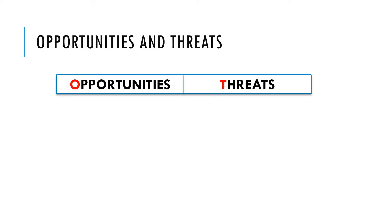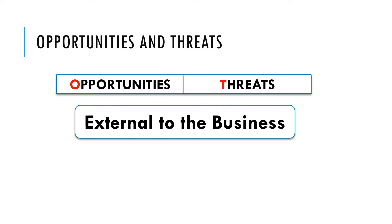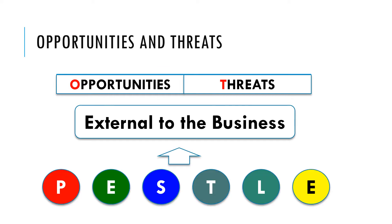Opportunities and threats are external to the business — they are to do with the external environment. To try and identify them, we might use the PESTEL approach and look at political, economic, social, technological, legal, environmental or ethical issues and see whether these present us with opportunities or threats. Obviously competition is an obvious one to look at alongside these.